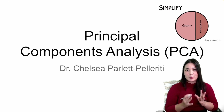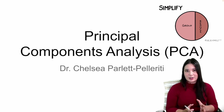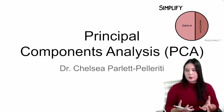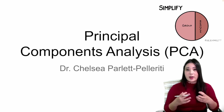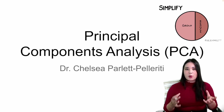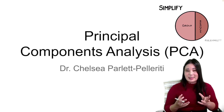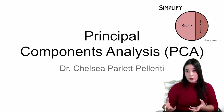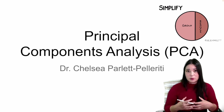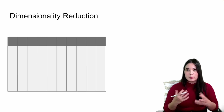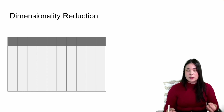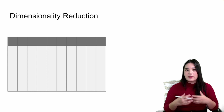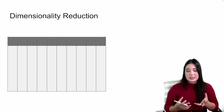Welcome to the principal component analysis lecture. So far, all the unsupervised machine learning we've been doing has been clustering, but the goal of unsupervised machine learning is to find latent structure in the data. One way to do that is to find groups through clustering, but that's not the only way. Principal component analysis is a method of dimensionality reduction, which is another type of unsupervised machine learning.